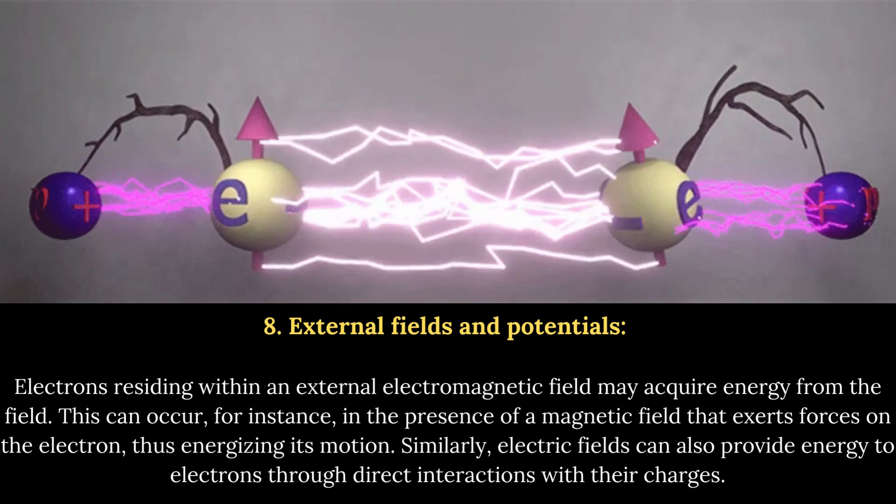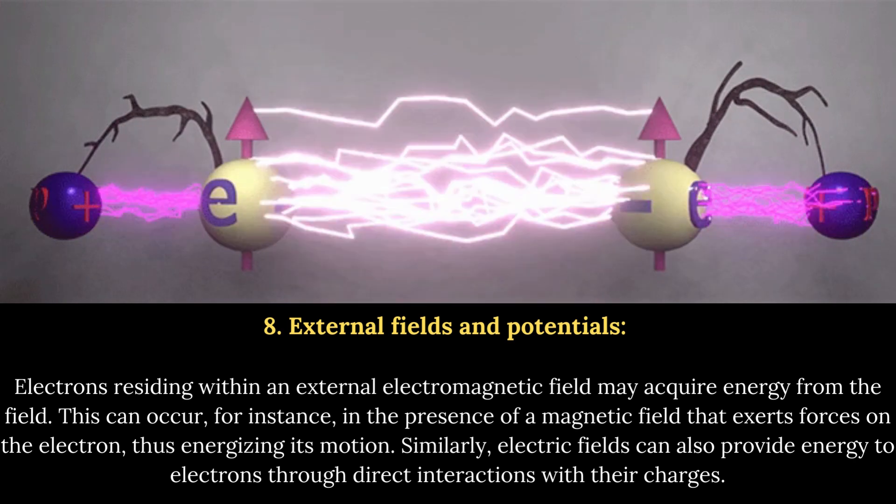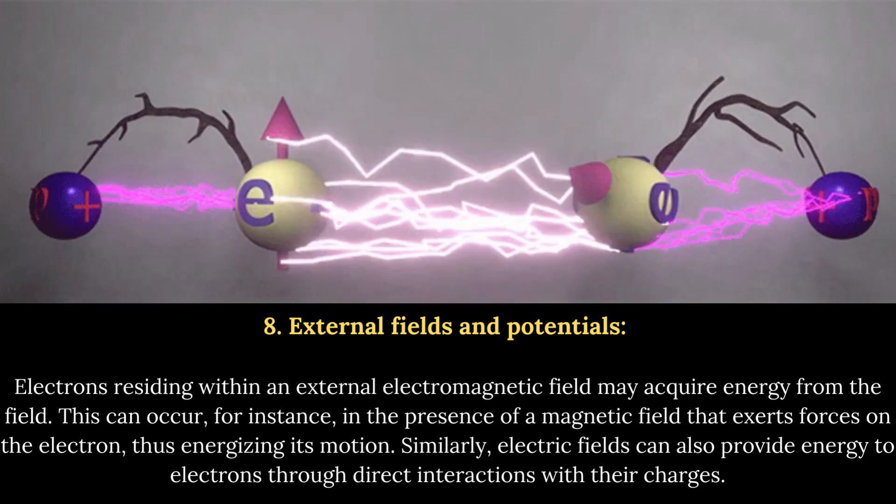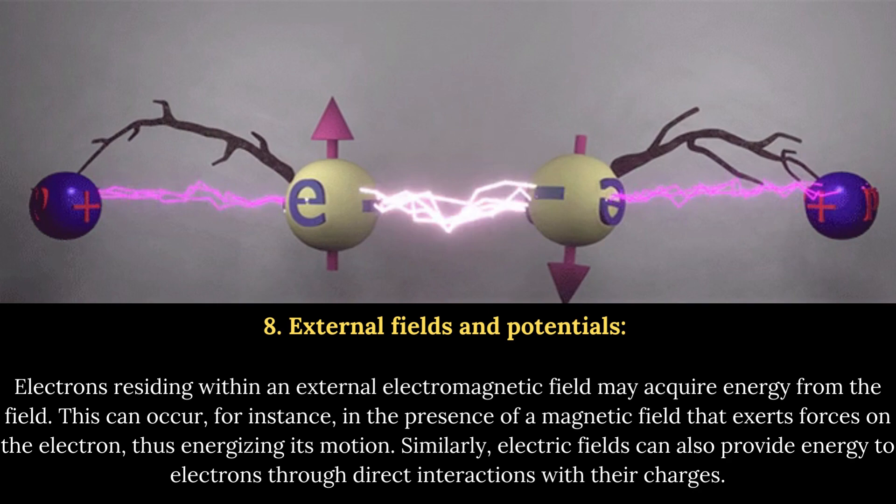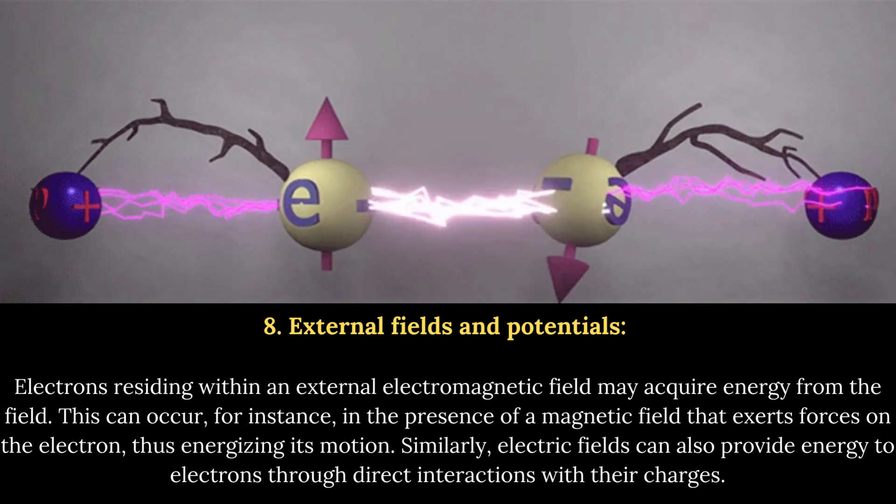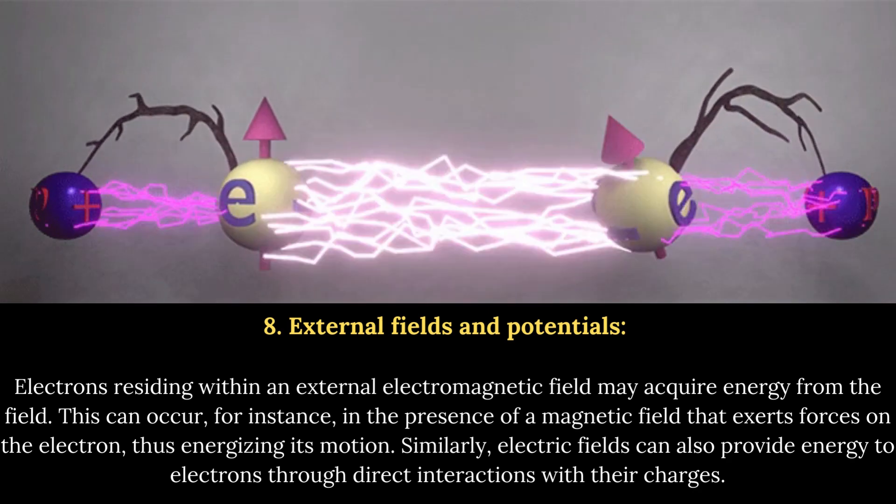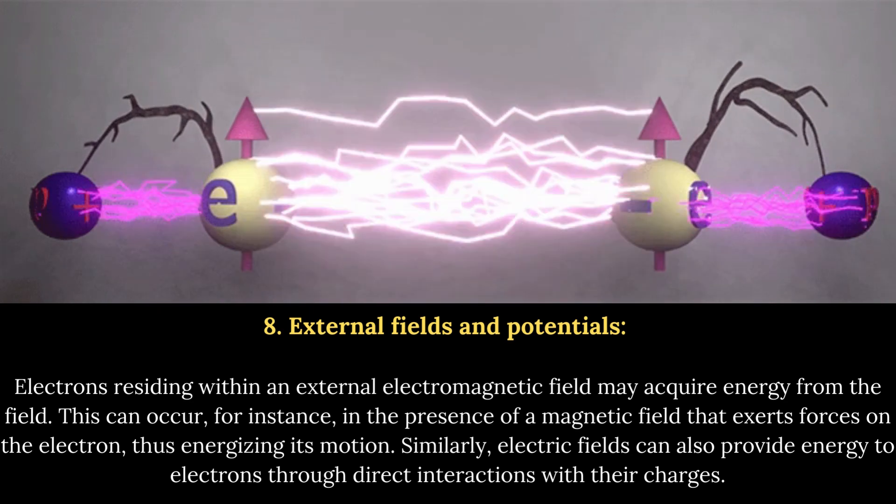This can occur, for instance, in the presence of a magnetic field that exerts forces on the electron, thus energizing its motion. Similarly, electric fields can also provide energy to electrons through direct interactions with their charges.